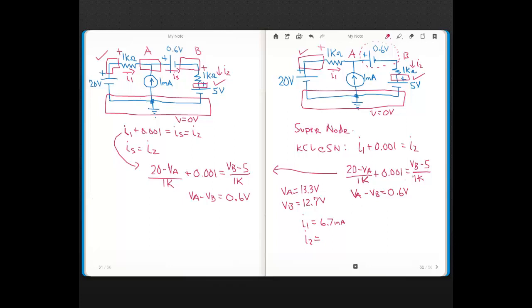And then I2, well, we just plug in here. VB is 12.7, so 12.7 minus 5, that's 7.7, so 7.7 milliamps.